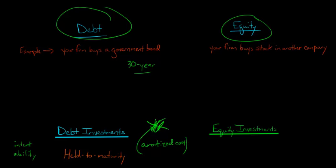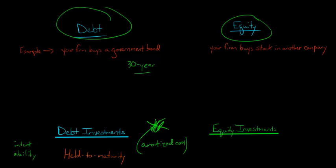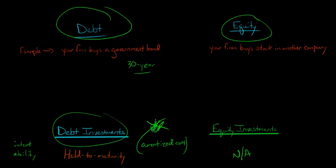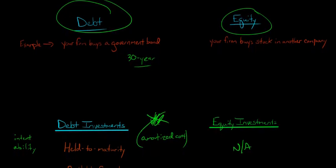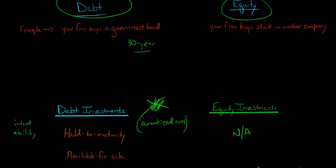Any unrealized gains or losses on held to maturity securities are not going to go to the income statement. Equity investments cannot be classified as held to maturity — it's not applicable. The reason is that if you bought stock in another company, it's not like that stock matures at some point in time. So held to maturity really only makes sense for a debt investment; it doesn't qualify for an equity investment.